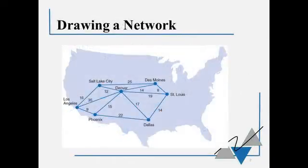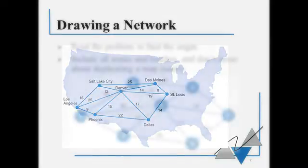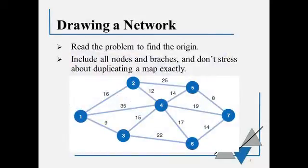So this is an example in the book. He has these cities labeled, and we want to turn this into a network. Now to turn it into a network, we don't have to exactly match the map. We just need a representation of that, where the nodes match and those numbers on the branches match. So if you move from a map to a network, it would look something like this. You want to read the problem to find the origin. That's important, and make sure you label that as node 1. And then you want to include all the nodes and all the branches, and make sure that we get all the numbers on there correctly also.